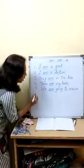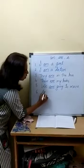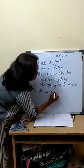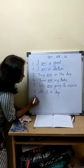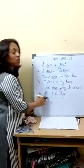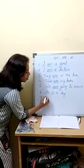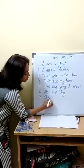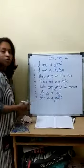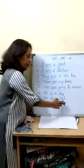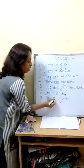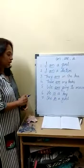Now we will see the examples for is. He is a boy. We are pointing to a particular boy, that time we use he is. When we are talking about a girl: She is a girl. He is a boy, she is a girl — when we are talking about a particular person, that time we use is.